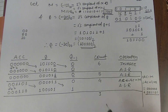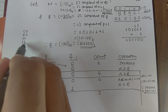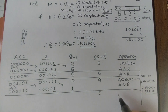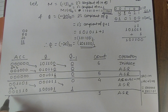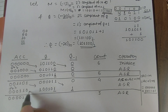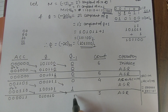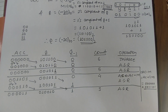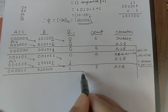In step 4, comparing Q LSB and Q-1 gives combination 11. For combination 11, just like 00, we simply perform ASR without any addition or subtraction. After shifting all register values right, count is decremented to 2.